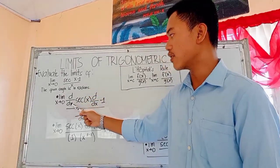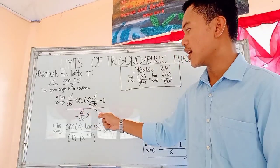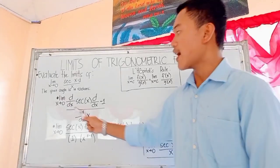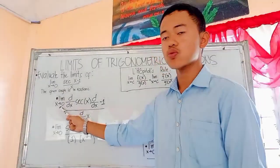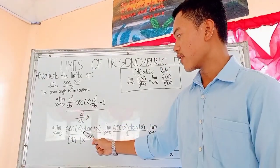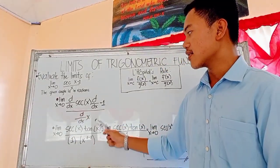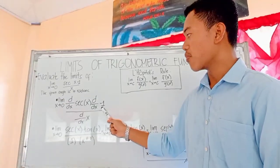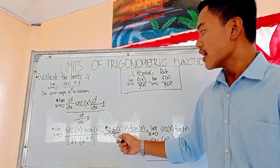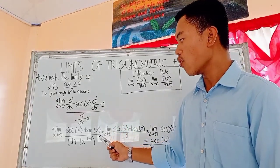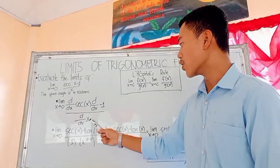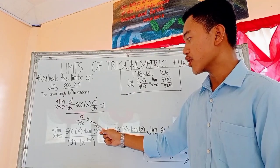The limit of the derivative of secant of x and the derivative of negative 1 all over the derivative of x as x approaches to 0. So the limit of the derivative of secant of x is secant of x tangent of x and the derivative of negative 1 is 0 because the derivative of a constant says that any constant, its derivative is 0.